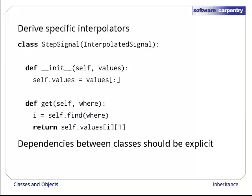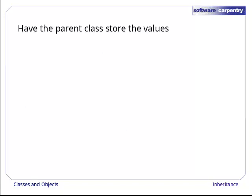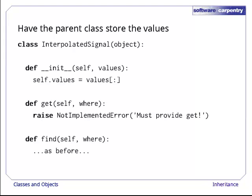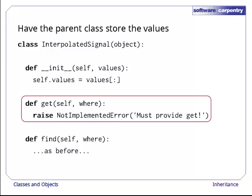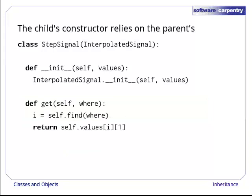Dependencies between classes should be more explicit. Let's see how to make them so. In this case, the right solution is to have the parent class store the values we're using for interpolation. This version of interpolated signal does exactly that. Its constructor makes a copy of values and assigns it to self.values. It also defines a method called get that raises a not implemented error exception, so that if anyone ever tries to create an object of this class and use it for interpolation, they'll get a meaningful error message instead of Python's default attribute not found. We can now rewrite step signal's constructor as shown here. Instead of storing values itself, this constructor calls interpolated signal's constructor, passing in the object being built, that's self, and the input parameter values. The syntax interpolated signal dot double underscore init double underscore is a bit clumsy, but the effect is pretty simple.